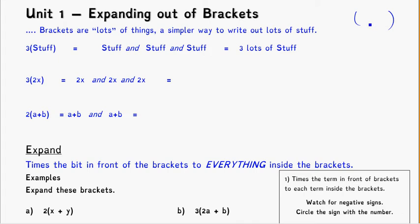You can think of brackets as groups of stuff — it's a simpler way of writing all those things out. For instance, this bracket here, three bracket stuff bracket, tells me that I've got three lots of stuff. That basically means three piles of identical stuff: I've got a stuff, and a stuff, and a stuff — that's three of them.